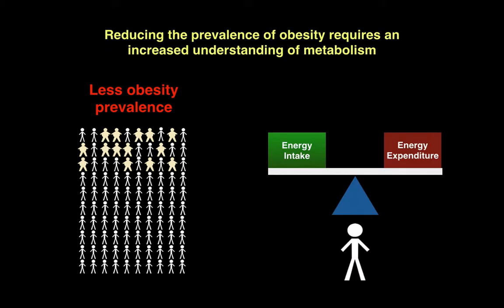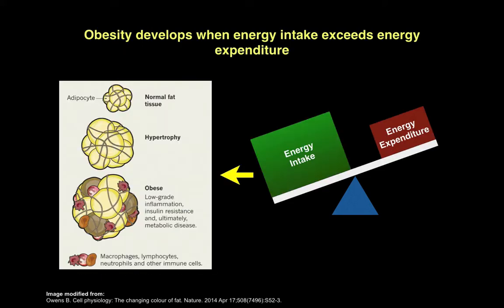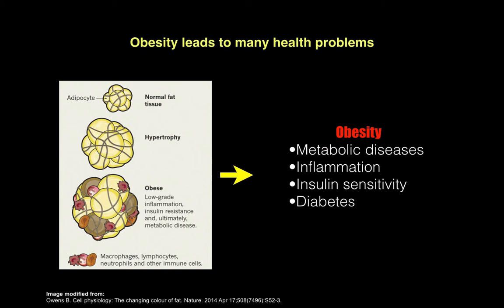Understanding how we can do this requires an understanding of metabolism, which is this balance of energy intake and energy expenditure. Obesity develops whenever energy intake exceeds energy expenditure. This excess energy needs to be stored in adipocytes, which make up adipose tissue in addition to this extracellular matrix. As energy is being stored, the adipocytes grow and get larger and begin to press against this extracellular matrix, causing stress, which often results in metabolic diseases, inflammation, insulin sensitivity, and sometimes diabetes — all very characteristic of obesity.